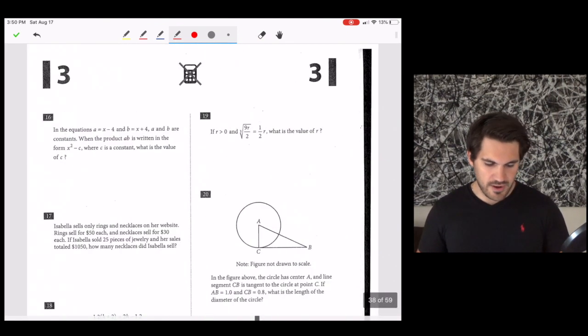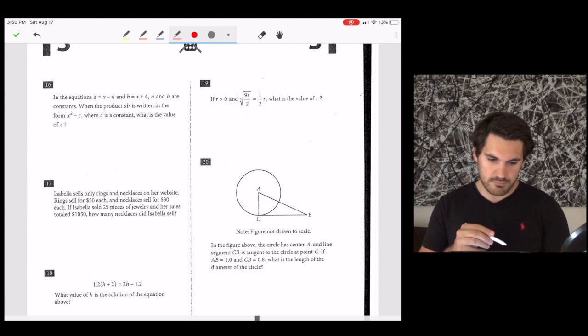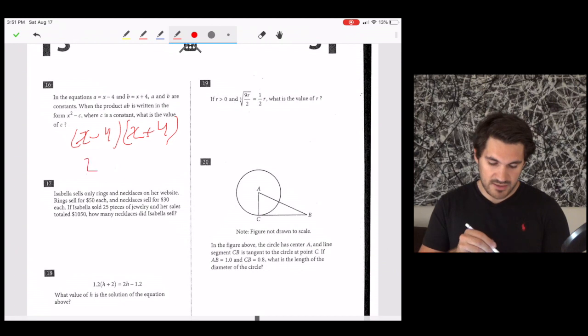And now, on to the grid ends, my friends. That was quick, not so bad. This test is not that horrific. I mean, it's a little horrific, but it's not the worst thing in the world. Number 16, in the equations, A equals x minus 4 and B equals x plus 4. A and B are constants when the product of AB is written in the form x squared minus C and C is a constant, what is the value of C? We had a similar question earlier. In order to get x squared, we can multiply x minus 4 by x plus 4. This is going to end up getting us x squared minus 16 because the middle terms cancel out, which means that C equals 16.